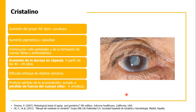El aumento de la dureza de la cápsula, que envuelve al cristalino, se da a partir de los 40 hasta los 65 años. Esto, más la pérdida de fuerza en el cuerpo ciliar, va a dar como consecuencia lo que conocemos como presbicia, porque el cristalino se endurece.